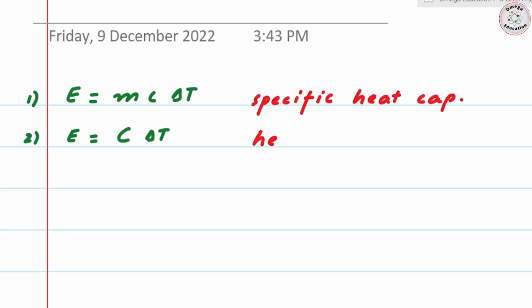Heat capacity doesn't include mass. Because it's not for per unit of mass, it's for whatever the amount of mass is given, it's the combined heat required for that whole mass.